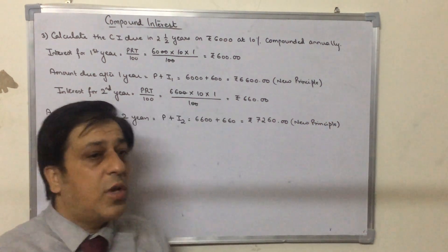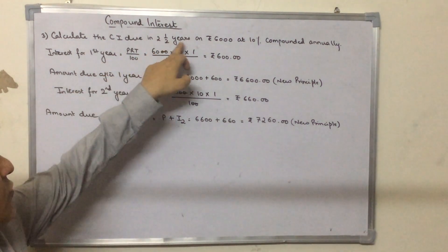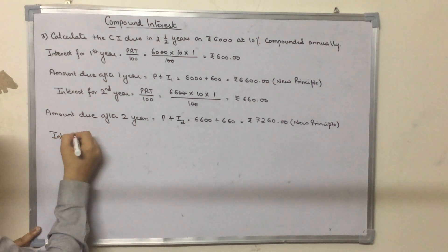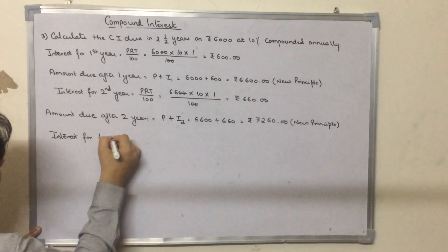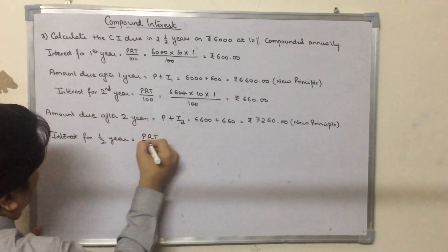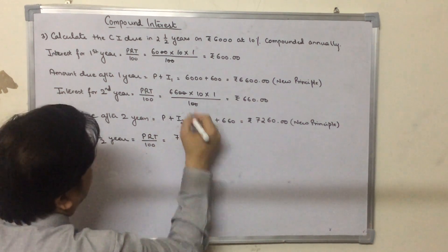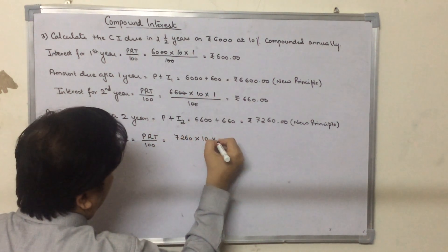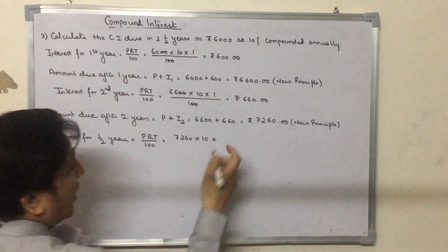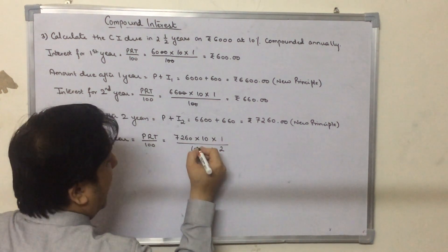We only have to calculate the interest for the next half a year. So we write: interest for the next half a year. This is again PRT upon 100. The principal is 7260, the rate of interest is 10, and the time in this case is 1 by 2 because we are only calculating it for half a year. And it is divided by 100.